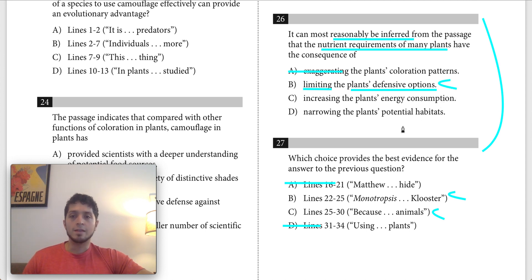C says the nutrient requirements of many plants increase that plant's energy consumption. Maybe this is true because these other plants are using photosynthesis, so maybe they have higher energy consumption. However, the text doesn't really mention this. It doesn't make this connection for us. So we're not able to make that inference. We don't know for sure that just because they're using photosynthesis that they have higher energy consumption. So let's get rid of C.